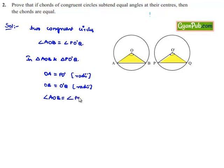And it is given that angle AOB is equal to angle PO'Q. Now here, by SAS property of congruency, we can say triangle AOB is congruent to triangle PO'Q.